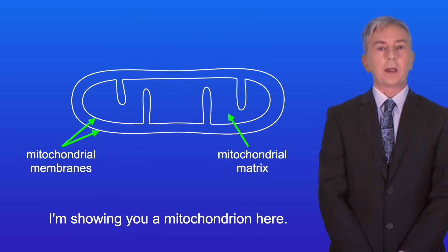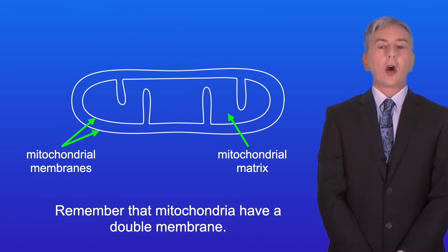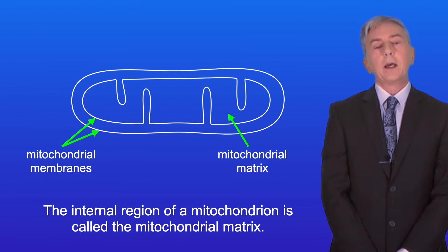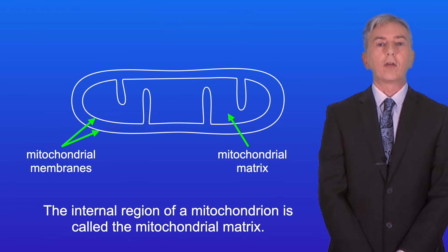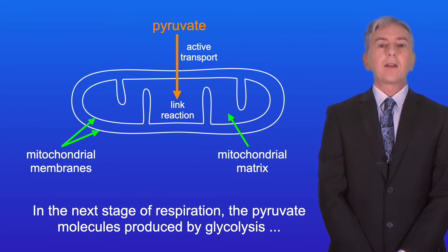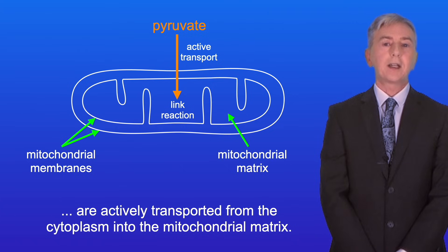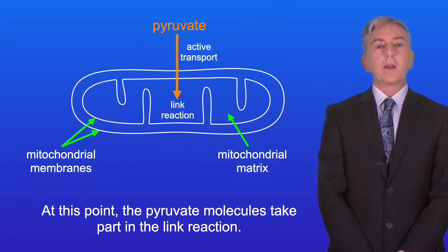I'm showing you a mitochondrion here. Remember that mitochondria have a double membrane, and the internal region of a mitochondrion is called the mitochondrial matrix. In the next stage of respiration, the pyruvate molecules produced by glycolysis are actively transported from the cytoplasm into the mitochondrial matrix. At this point, the pyruvate molecules take part in the link reaction.